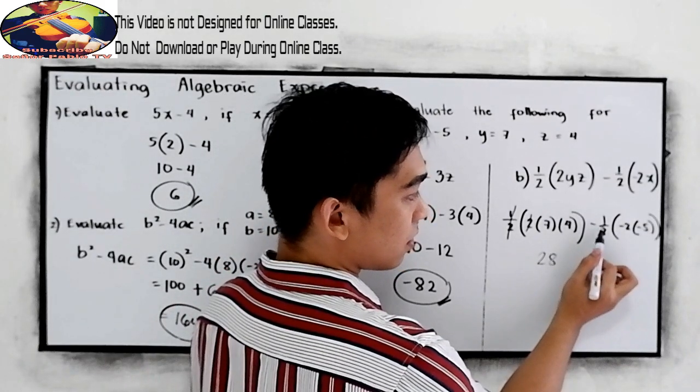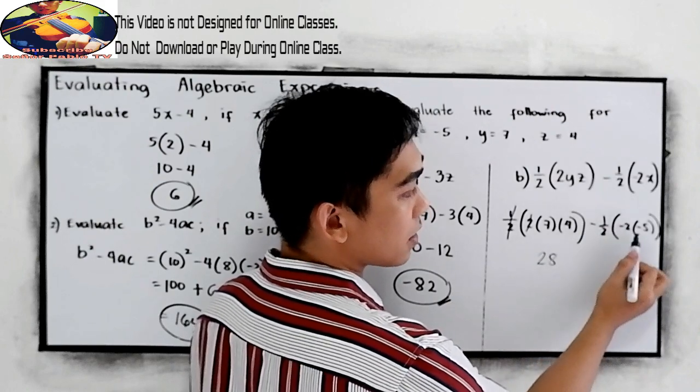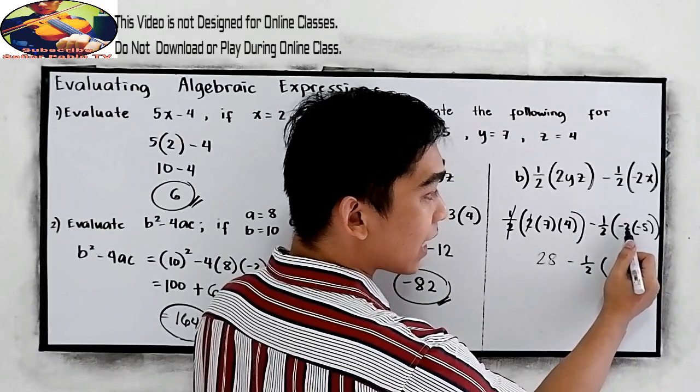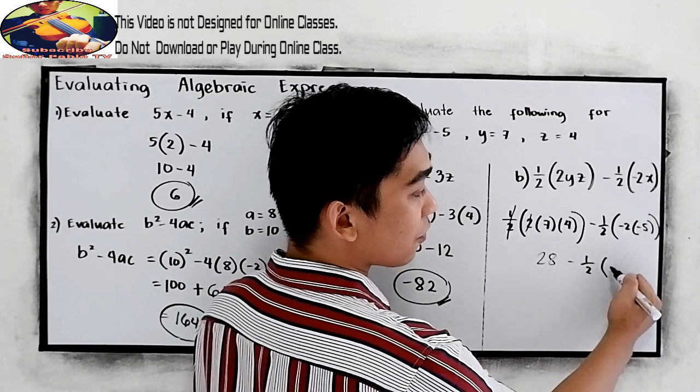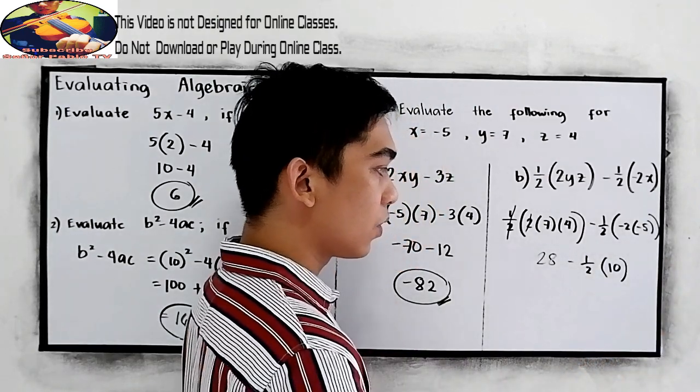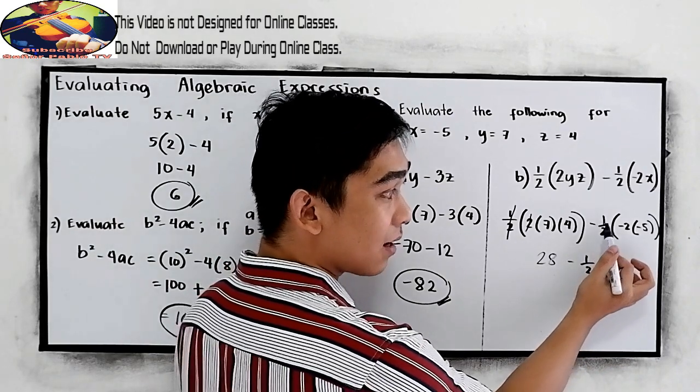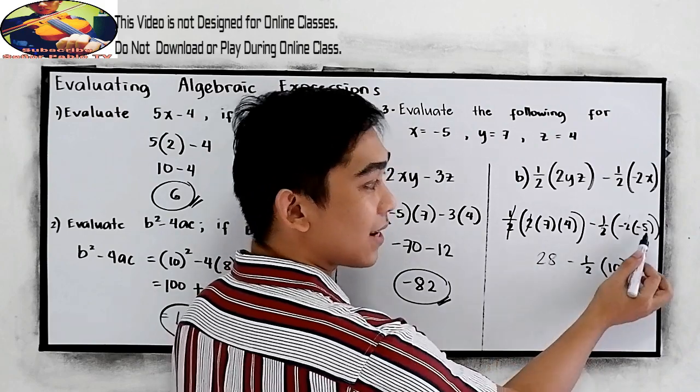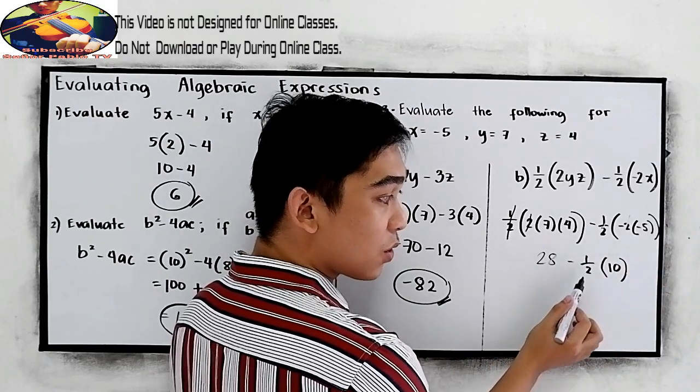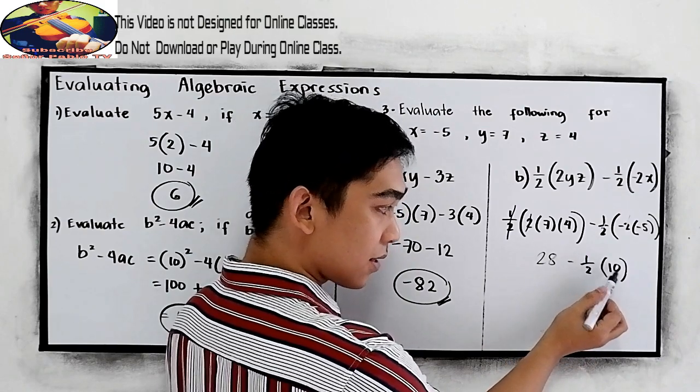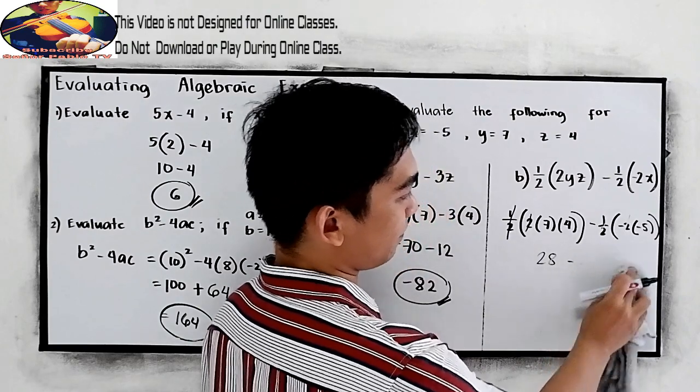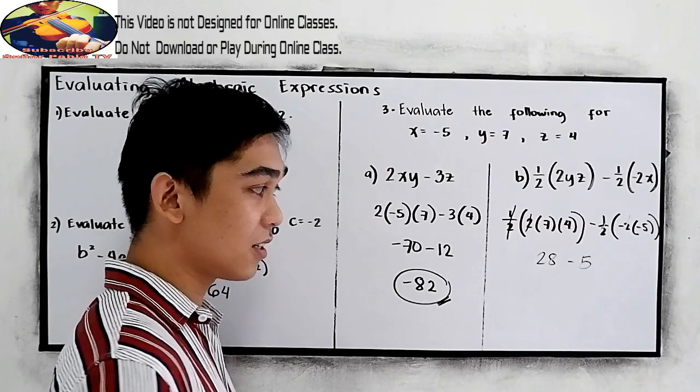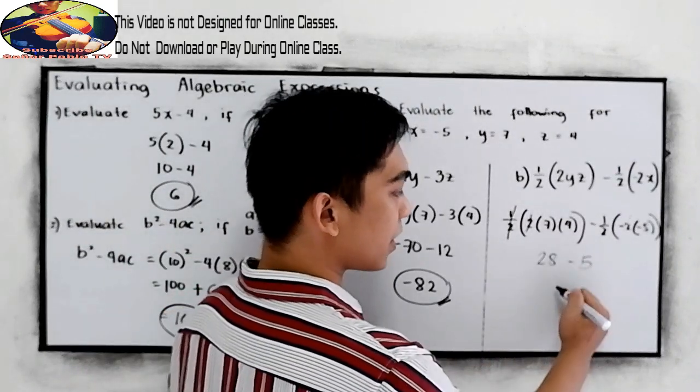Let's do the same process here. Since we're just going to copy negative 1 half, then negative 2 times negative 5, positive 10. Or, if you want, you can cancel 1 half and 2, will give us negative 5. That is the same if we're going to simplify 1 half times 10, that will give us 5. Now, for your final answer, 28 minus 5 is 20.